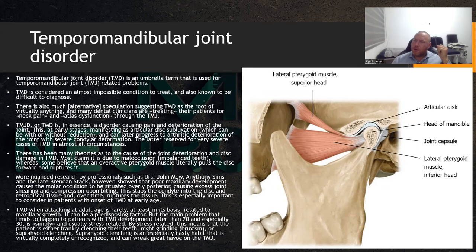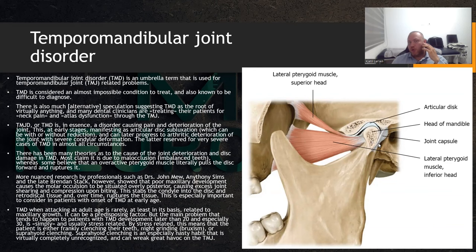Trigeminal nerve problems are common — not rare — in TMD, because the auriculotemporal nerve, which is a branch of the trigeminal nerve, can be entrapped behind the condyle, the head of the mandible, and be compressed there. It can also be irritated or entrapped as it pierces through the lateral pterygoid muscles within the muscle tissue itself.